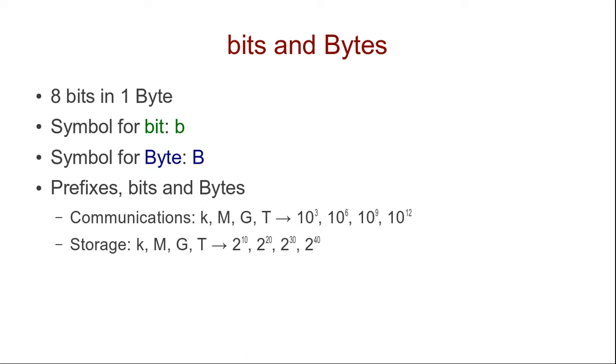But when we talk about storage, those same prefixes, k, m, g and t, commonly refer to slightly different values. And in their binary forms, 2 to the power of 10 for kilo, 2 to the power of 20 for mega, 2 to the power of 30, 2 to the power of 40, and so on. Note there are different values.